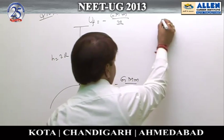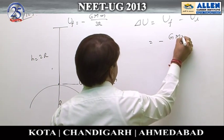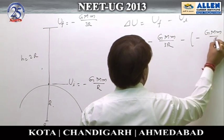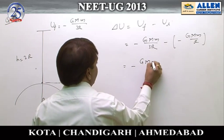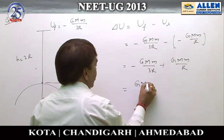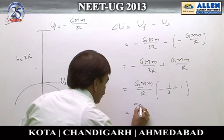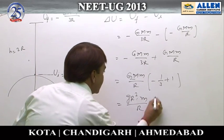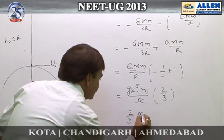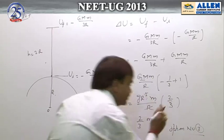We find the change in potential energy: ΔPE = final minus initial = (-GmM/3R) - (-GmM/R) = -GmM/3R + GmM/R = GmM/R × (1 - 1/3) = 2GmM/3R. So the answer is 2mgR/3, which is option number 3.